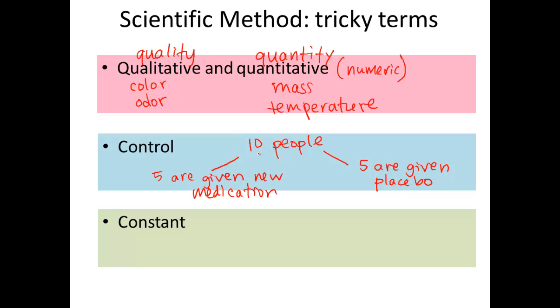So, of this group of ten people, five are given new medication, five are given the placebo. Which of these is the control group? The control group is the one that doesn't have the variable in question. So, the one that's given the placebo is called the control group. Because what we want to look at specifically is how does this new medication help these people or not?